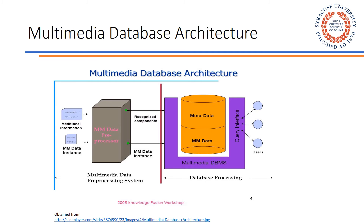Now we will be talking about the multimedia database architecture. This architecture basically varies depending on the type of application. However, all architectures comprise two main components: database processing and multimedia data pre-processing system. Database processing involves querying of the multimedia DBMS by users through a query interface, and based on the query, multimedia data like audio and video is searched and manipulated. The multimedia data pre-processing system provides additional information to handle the query based on the type of DBMS used.